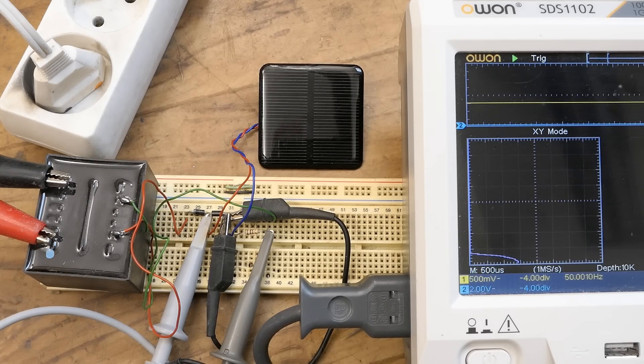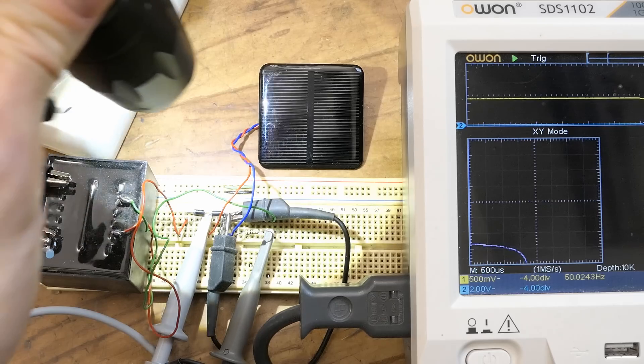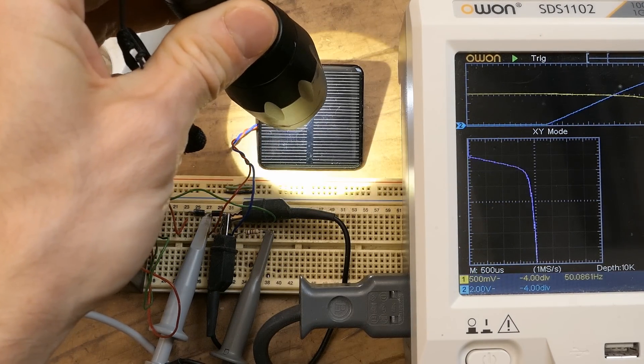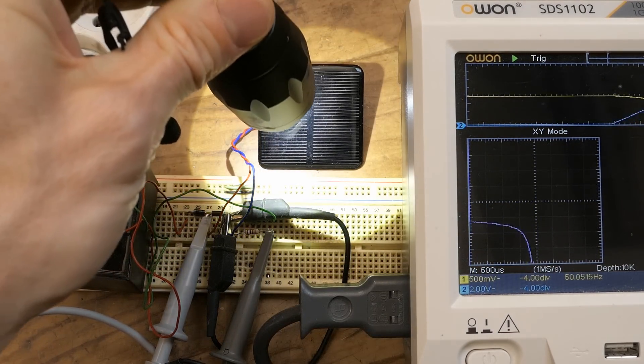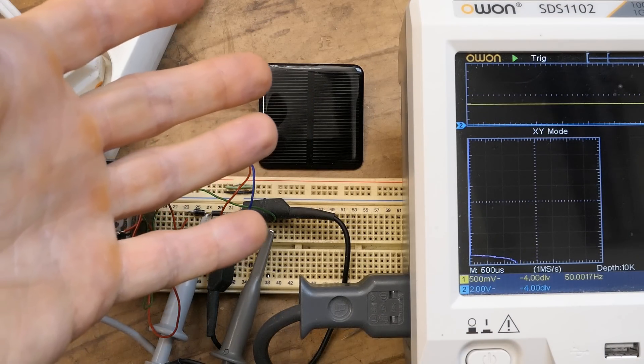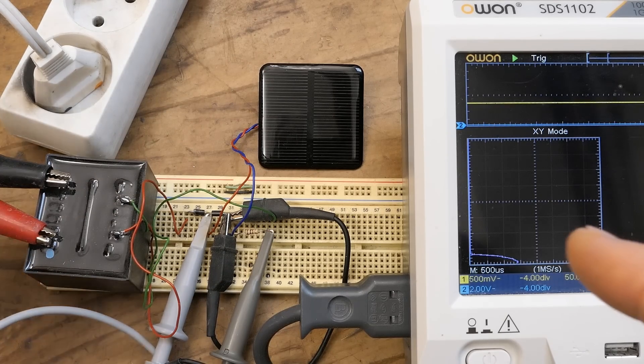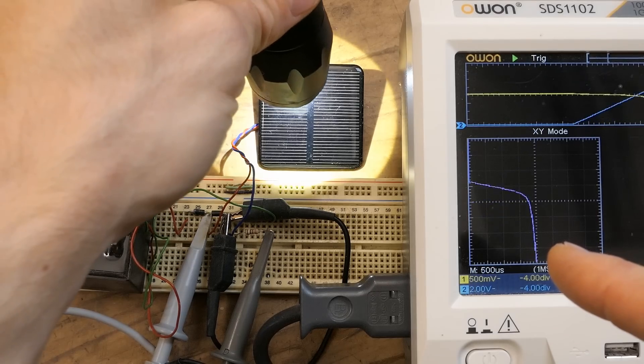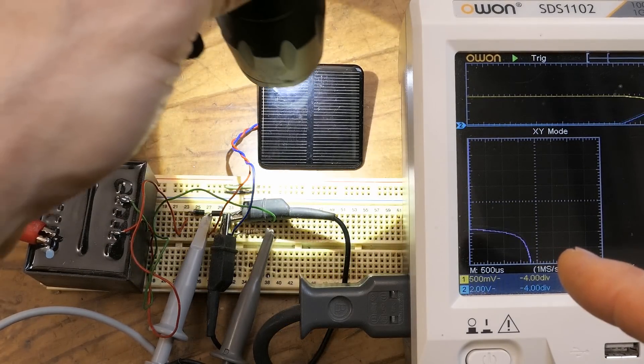Let's try a very simple technique to visualize the IV curve of a solar panel or cell. A very simple curve tracer for solar panels, showing the current voltage characteristic of the panel at any illumination level.